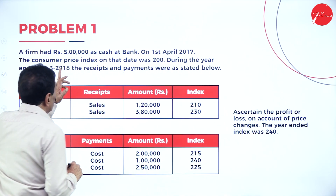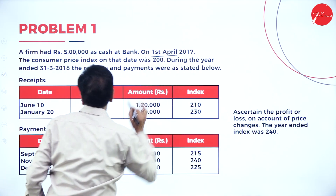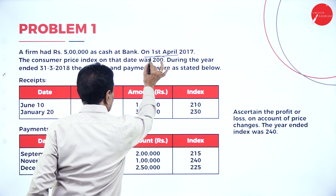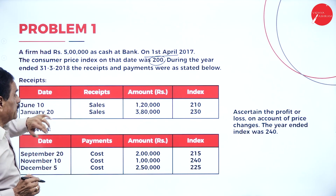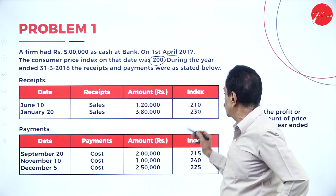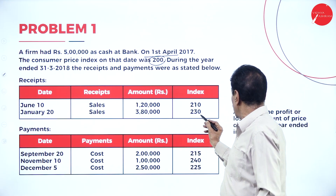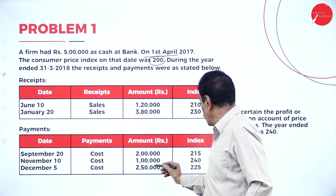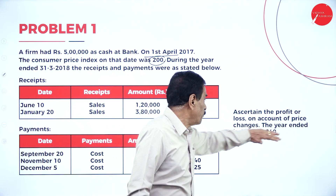A firm had rupees five lakh as cash at bank on 1st April 2017. The consumer price index on that day was 200. During the year ended 31st March, receipts and payments were as follows: sales of 1 lakh 20,000 with index 210 on January, and sales of 3 lakh 80,000 with index 230.